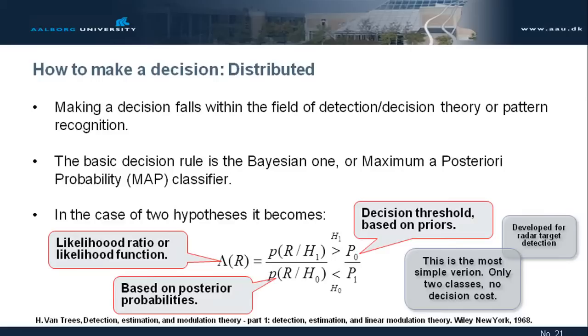Basically, if we have two hypotheses of a phenomenon, for example, there is or there is not a spectrum hole, that could be an example. I compute my likelihood ratio or likelihood function by taking the posteriori probabilities of these two phenomenons, given the received signal r, and then I compare with respect to the ratio of the priors of the phenomenon. This is the most simple. You can extend it into billions of different ways. You can combine it. And it was developed for radar target detection.